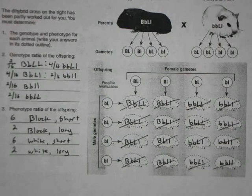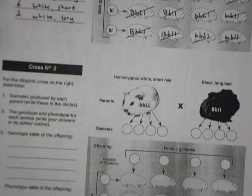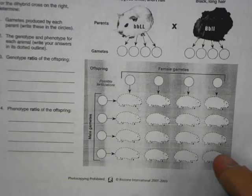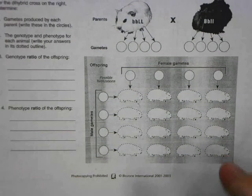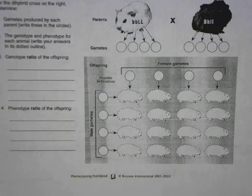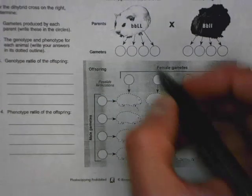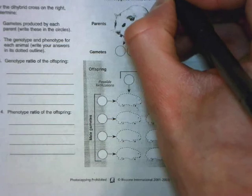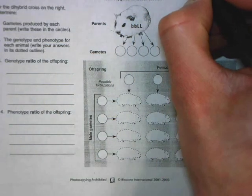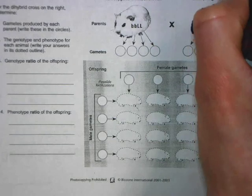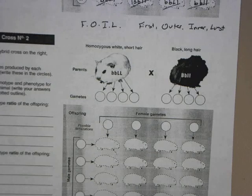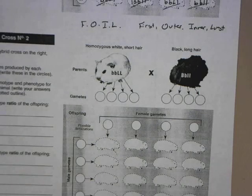There's one other step we need to look at, and that is actually producing the gametes. When we figure out our gametes, we need to use something called FOIL — some of you may be familiar with it from math class. FOIL stands for First, Outer, Inner, and Last. I'm going to use FOIL with the parents' genotypes to determine their gametes.